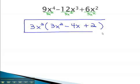We have now factored this expression to 3x squared times 3x squared minus 4x plus 2. Notice, if we were to multiply the 3x squared back through the parentheses by distributing, we would get the original problem that we started with.